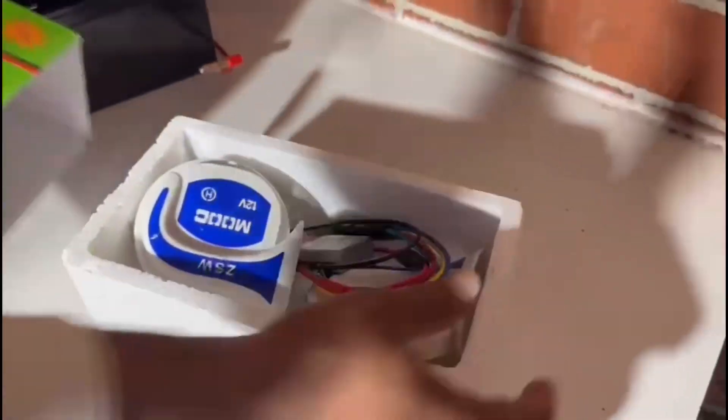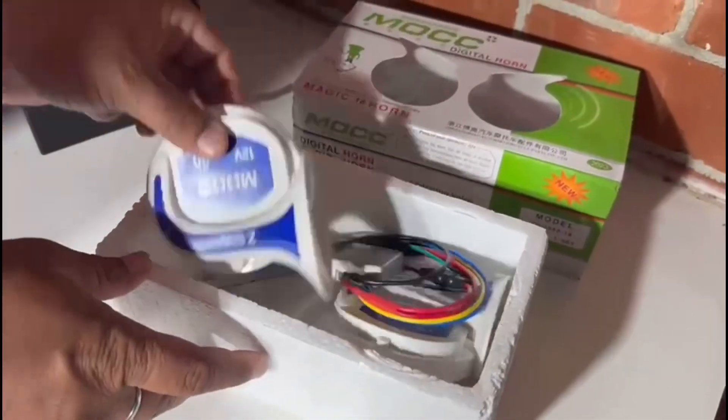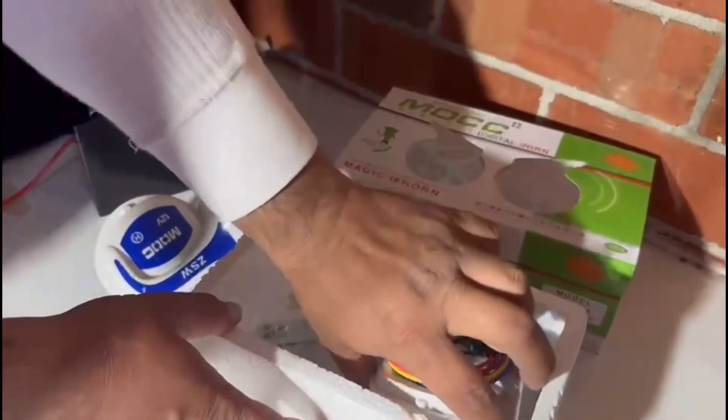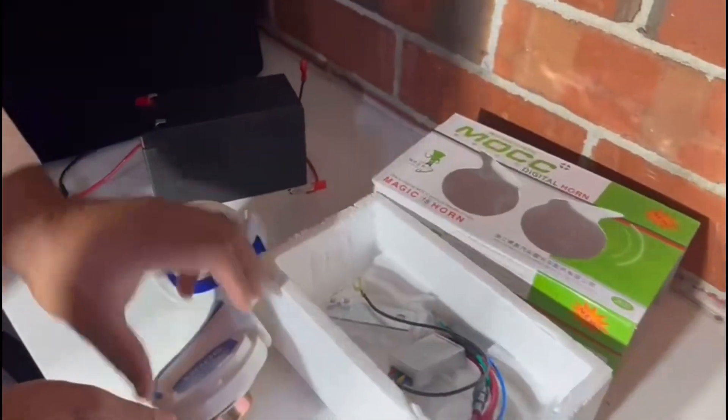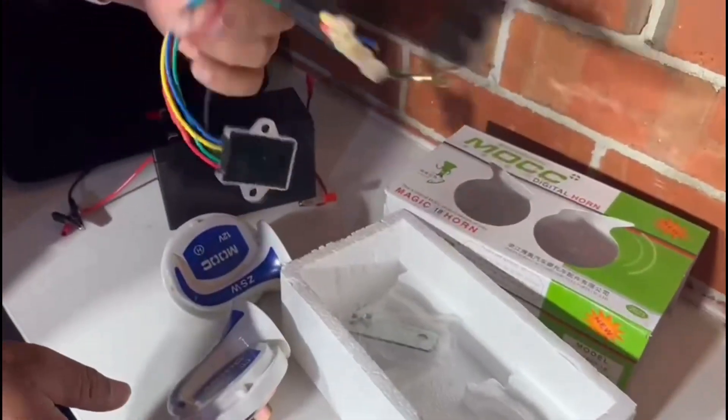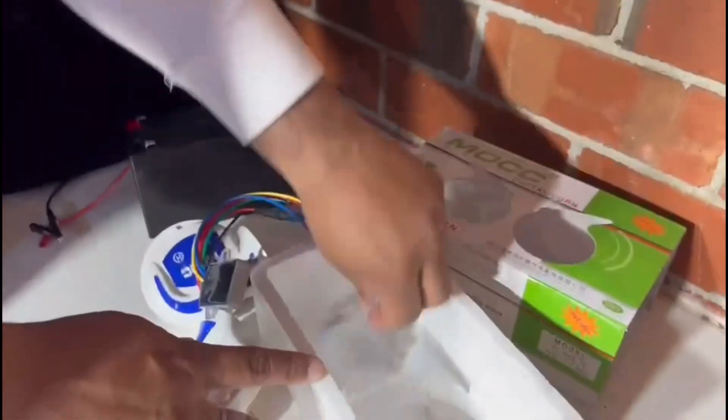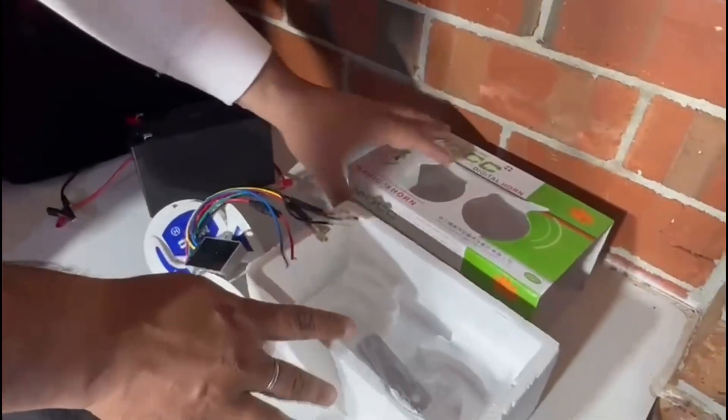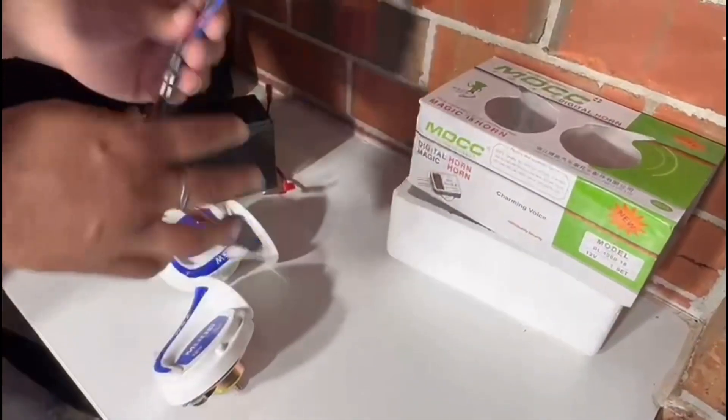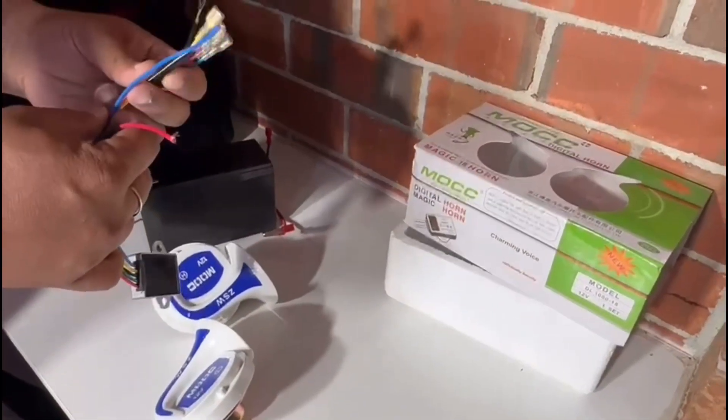It comes in packaging like this. Just open it. There's two horns in there, one tuner, and some fittings to install it in your car. Let's put it aside and start the wiring.